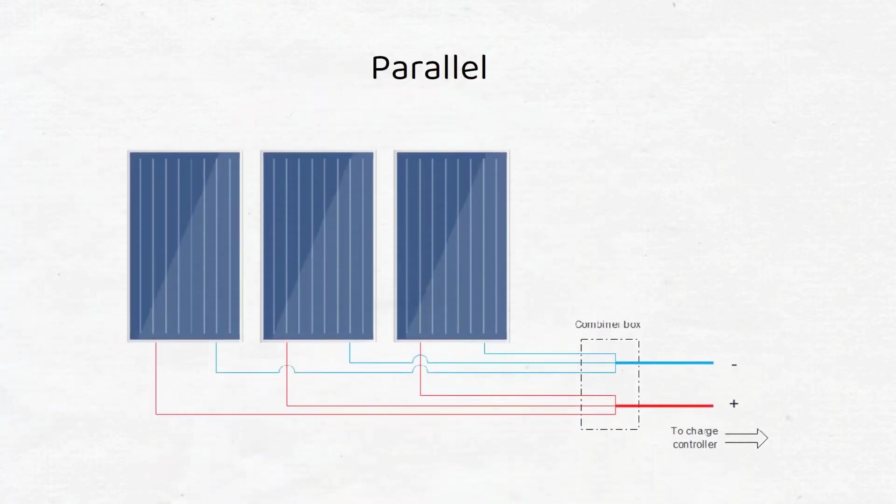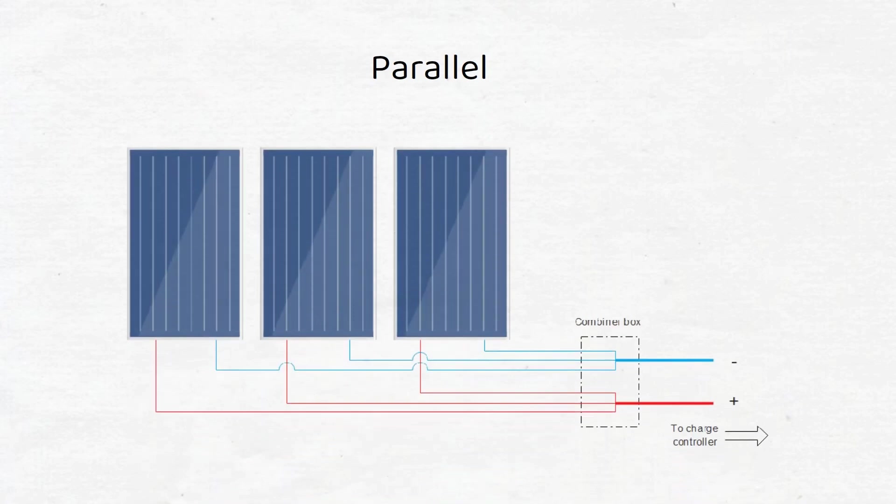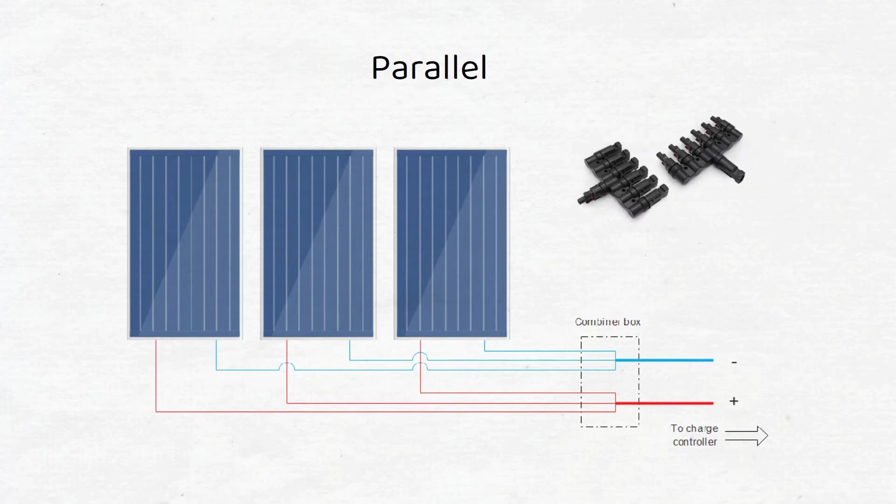In a parallel circuit, all the positive and negative wires go to the combiner box, or they are connected via special MC4 connectors called branch connectors. This will make it easy to do maintenance if you have to remove a panel or add some more to your setup. The downside is that you have to install a combiner box or branch connectors and make it waterproof.